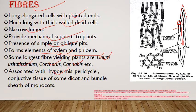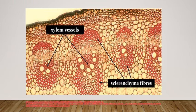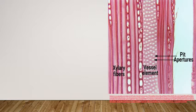Fibers are also associated with hypodermis, pericycle, and conductive tissue. In dicots and monocots they are present in bundle sheets. This picture shows a dicot vascular bundle — the cap-like structure at the bottom is sclerenchyma fiber.